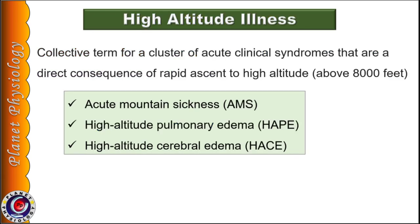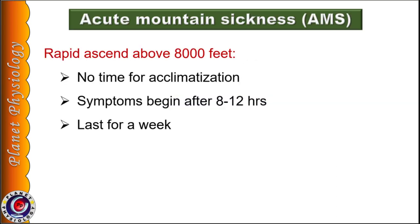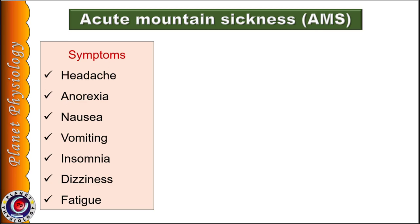The cluster of acute clinical syndromes that are direct consequences of rapid ascent above 8,000 feet is termed high altitude illness. It includes acute mountain sickness, high altitude pulmonary edema, and high altitude cerebral edema. Acute mountain sickness occurs due to rapid ascent above 8,000 feet because the body does not get enough time to acclimatize. Symptoms begin after 8 to 12 hours of exposure and last for about a week. Headache is the cardinal symptom of acute mountain sickness.